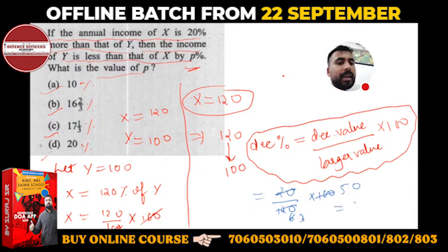If you write it in mixed fraction, this will be how much? This will be: 3... 16, threes are 48, 16 and 2 by 3 percent. So 16⅔ percent. B will be the right answer, okay?